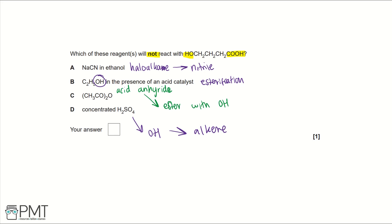So the only reagents that don't react to form either an ester, an alkene, or anything else is A because we don't have this haloalkane. We write A in the answer box and to get the mark you need to write A in the answer box provided.